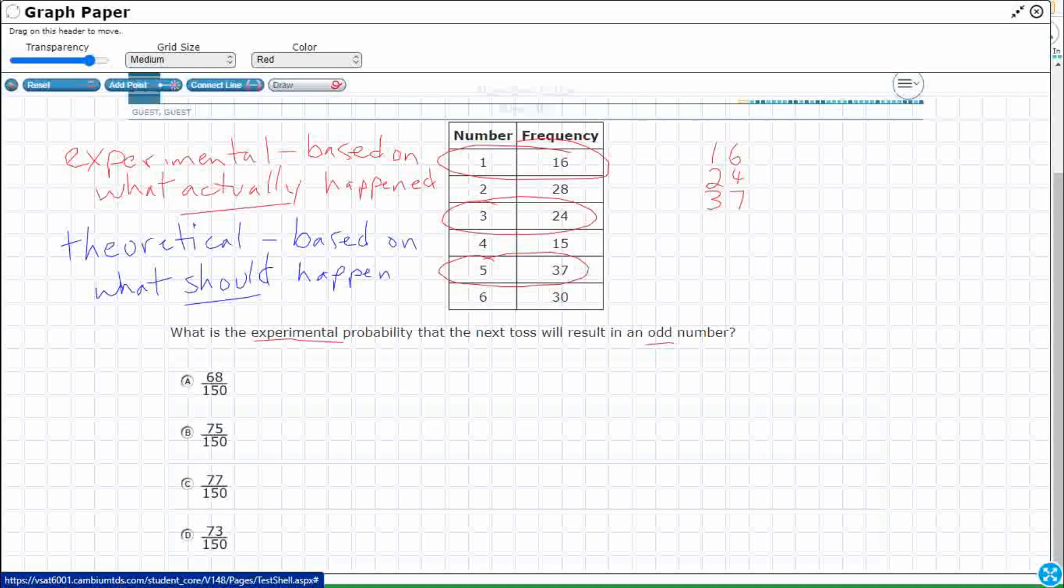So based on what actually happened the first time I did this 150 times, I'm going to add up these three results here because this is going to tell me how many times out of 150 I actually landed on an odd number, 1, 3, or 5. So that's 10, that's 17. That's going to be 2, 4, 7. Okay, so 77 out of, and our denominator is going to be how many tosses there were.